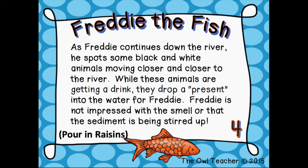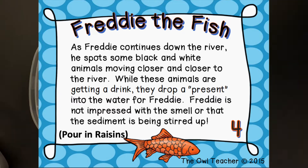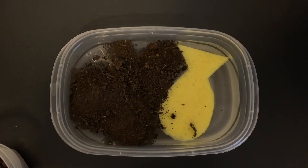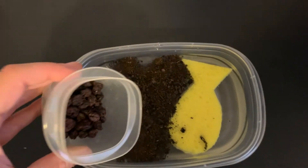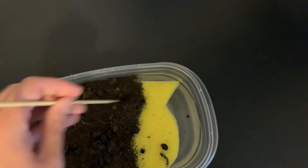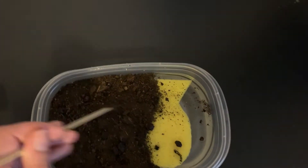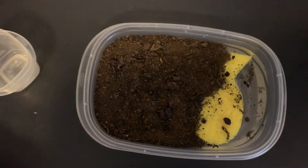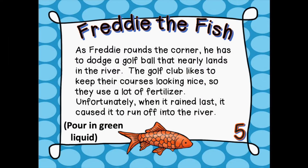As you can see, he's starting to get pretty dirty and he doesn't look too happy anymore because there's soil in his river. As Freddie continues down the river, he spots some black and white animals moving closer to the river. While they're getting a drink, they drop a present into the water for Freddie — and he is not impressed with the smell or the stirred-up sediment. We're going to add in the raisins. It's starting to look pretty yucky, and little Freddie is starting to go under the water.